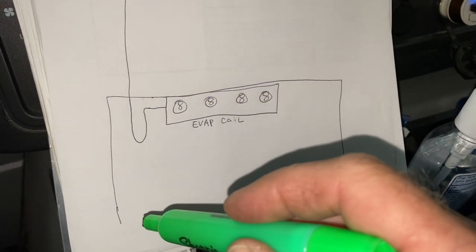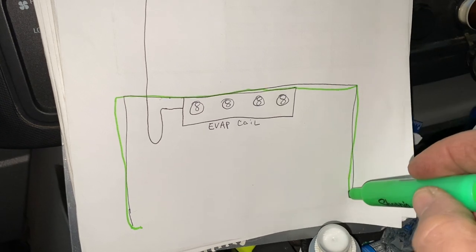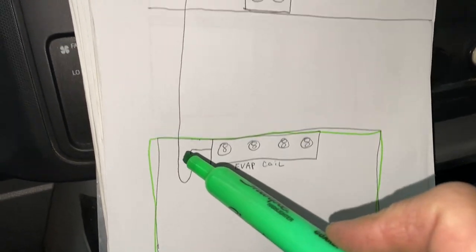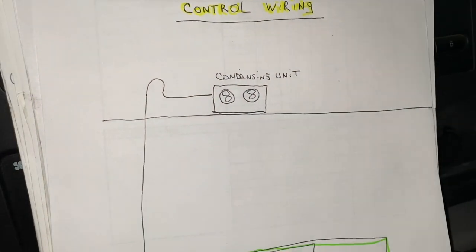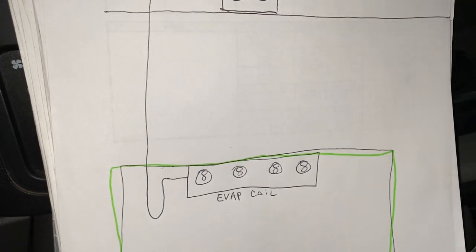This here is our walk-in box. It's our evaporator coil, our line set up to the roof to our condensing unit. How do you like that quality drawing, huh? Good stuff.